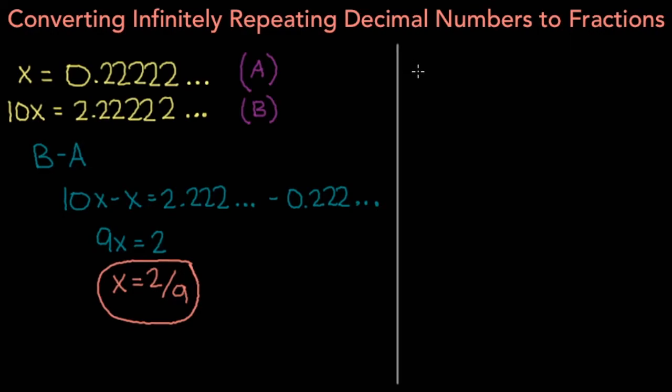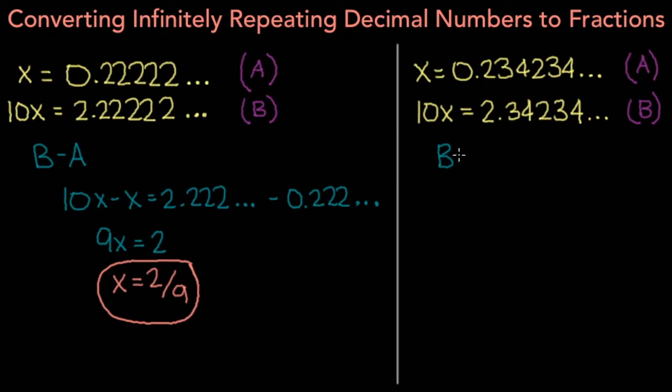Now let's try a variation of this problem. Let's say we have to convert the infinitely repeating decimal quantity 0.234, 234, and so on, to a fraction. If we try to use the same technique as in the last problem, and multiply both sides of the equation by 10, we get 10x is equal to 2.34234, and so on. If we call this equation a, and this one b, now if we subtract a from b, on the left side, we have 9x.